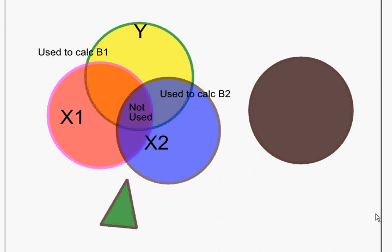As so often happens, I record a 10 to 11 minute video, and then when I'm done, I realize there are some important things I left out. So I'm going to make a second part to this Venn diagram regression video.